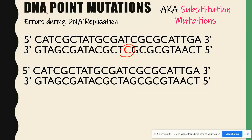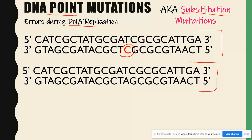We call these point mutations because they happen at a single point. They're also known as substitution mutations because the A was substituted for a C. Since the whole point of DNA replication is to make identical daughter cells, this chromosome would end up in cell number 1 and this in cell number 2, made by mitosis. In actuality, they wouldn't be identical — only one of the cells would actually have the mutation.